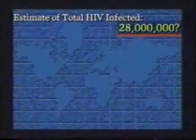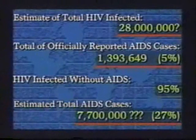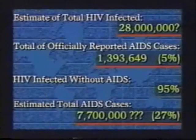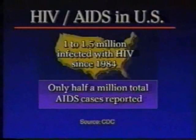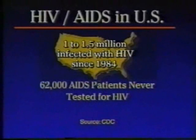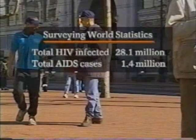Finally, the most convincing argument against HIV: the millions of people worldwide who have the virus and are not becoming sick. This is very apparent in Africa, where 97% of those with HIV are healthy and do not have AIDS — documented AIDS cases amount to only 3%. Also in the U.S., where only half a million infected have progressed to full-blown AIDS over a 15-year latency period. It is evident: HIV does not cause AIDS in most people, and this evidence becomes stronger every year.